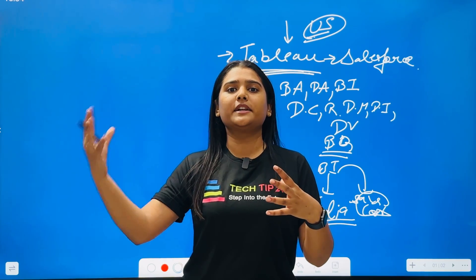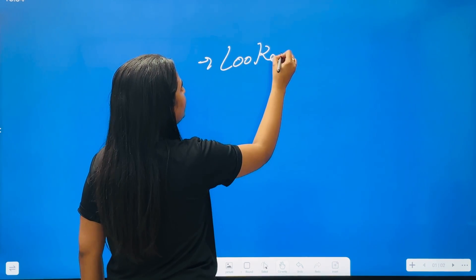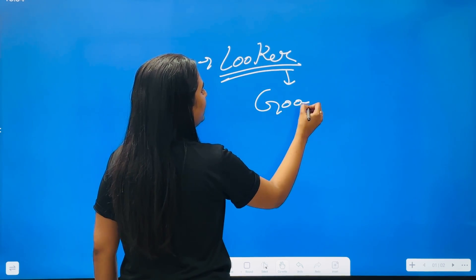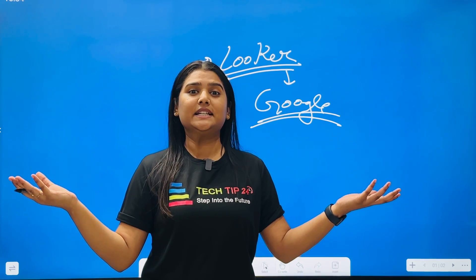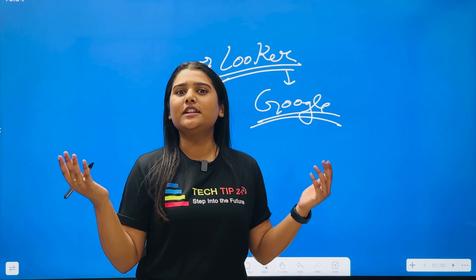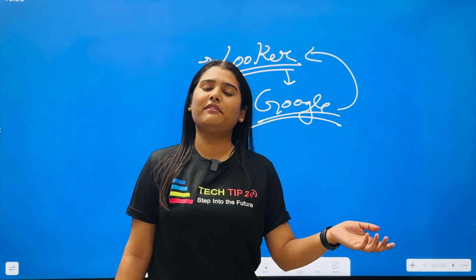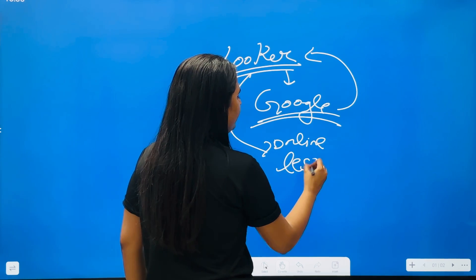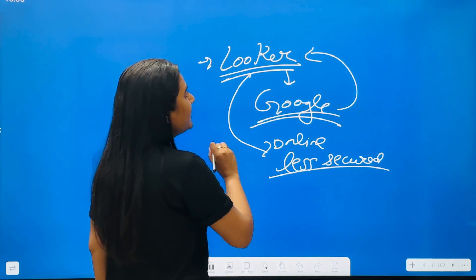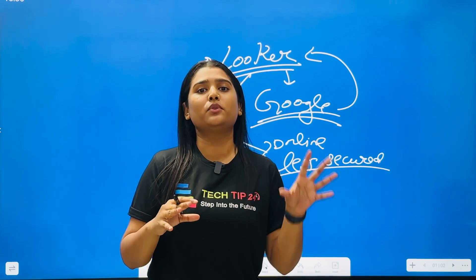The third business intelligence tool to note is Looker — a tool by Google. Every big brand comes up with its own BI tool, and Google has Looker. Google itself uses Looker internally for data analysis, just as Microsoft uses Power BI internally. However, Looker is currently completely online and not available offline, and comparatively it is less secure. That's why Looker hasn't captured a lot of market yet.